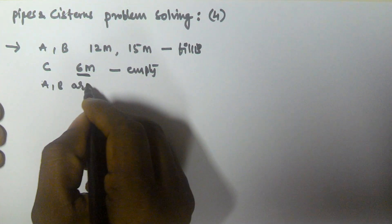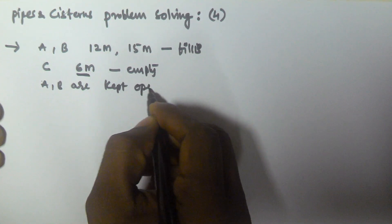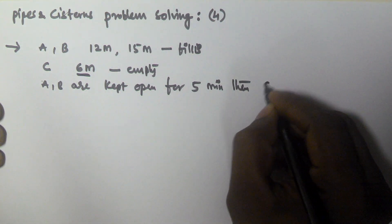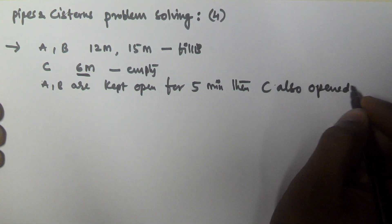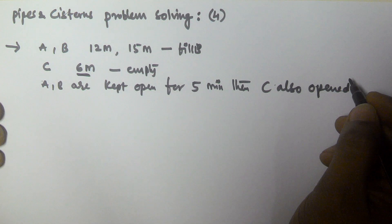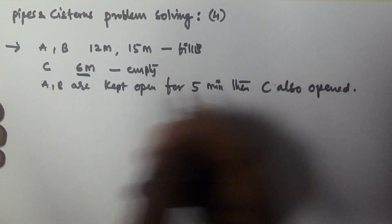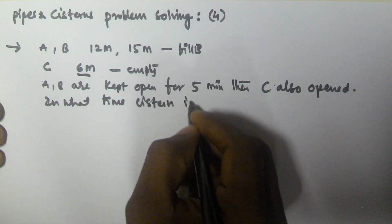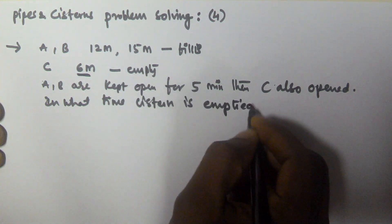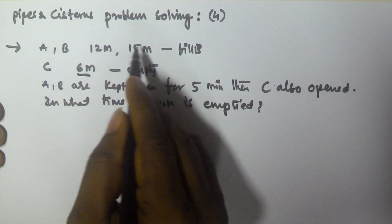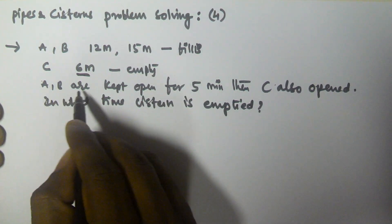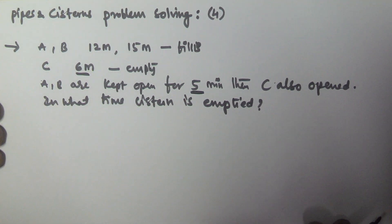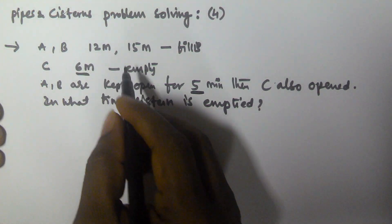A and B are kept open for 5 minutes, then C is also opened. In what time is the tank emptied? So A takes 12 minutes, B takes 15 minutes to fill the tank, and C takes 6 minutes to empty the whole tank. A and B are kept open for the first 5 minutes, and then C is also opened — in what time is the tank empty?